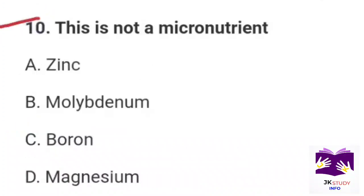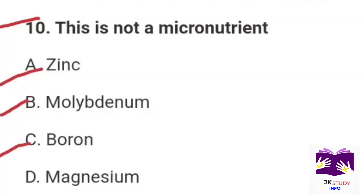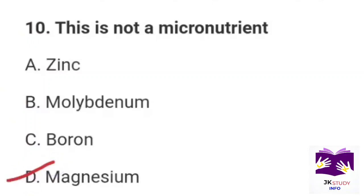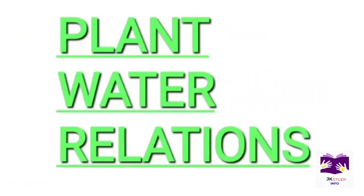Next question: This is not a micronutrient. Option A: zinc. Option B: molybdenum. Option C: boron. Option D: magnesium. Correct option is Part D: magnesium. Now we will discuss the next topic of plant water relations with its most important MCQs.